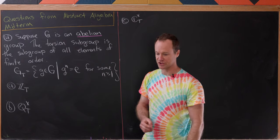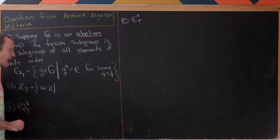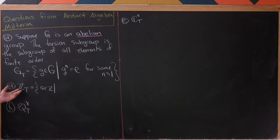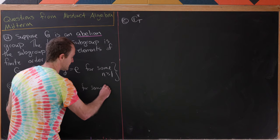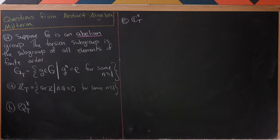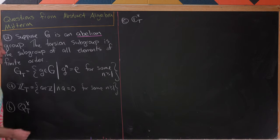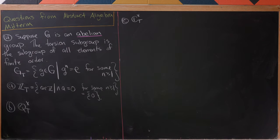Let's calculate a couple of torsion subgroups. Let's look at the torsion subgroup of the integers. That's going to be all a in Z where a has finite order. In the integers the group operation is addition, and repeated addition is indicated by multiplication, so we would have n times a equals zero for some n ≥ 1. Notice if n ≥ 1 then n is not zero, so solving n·a = 0 with n nonzero means a must equal zero. So that gives us just the trivial subgroup — the subgroup containing only zero. That's the only thing of finite order.